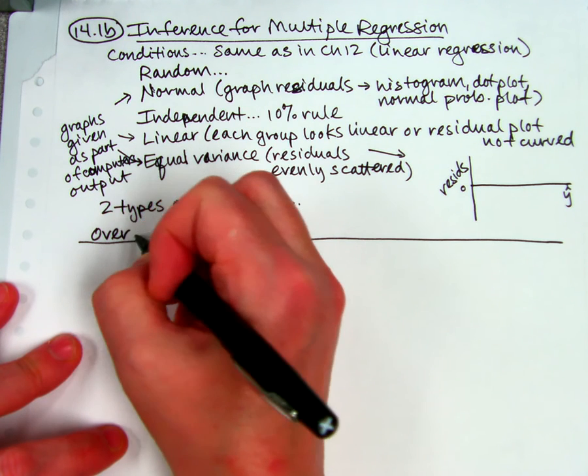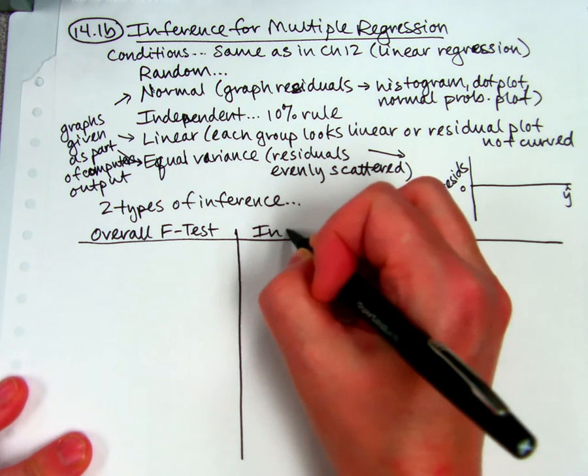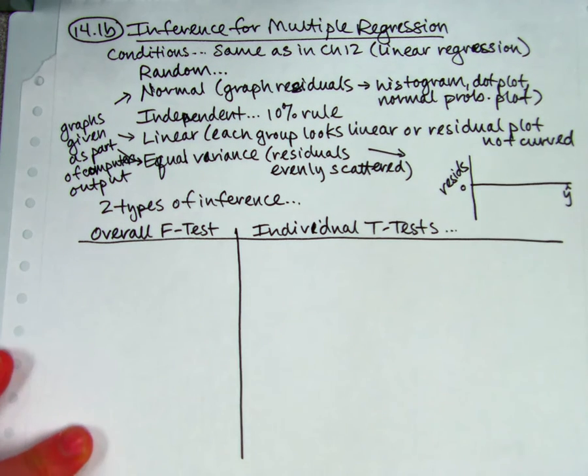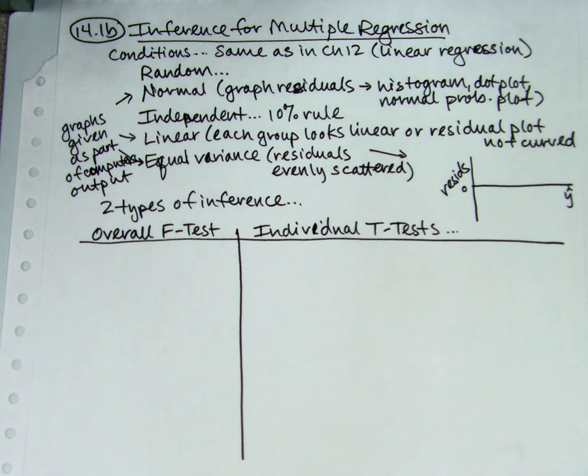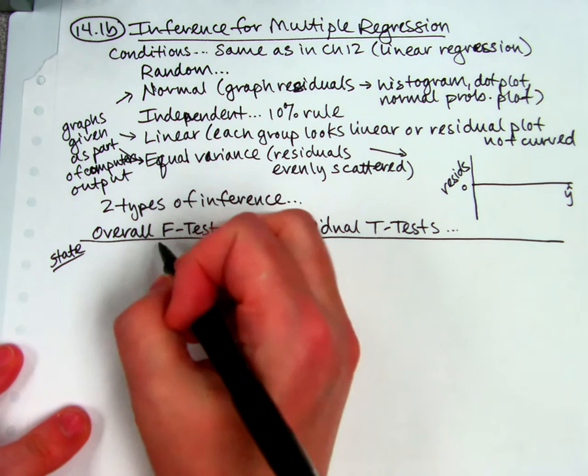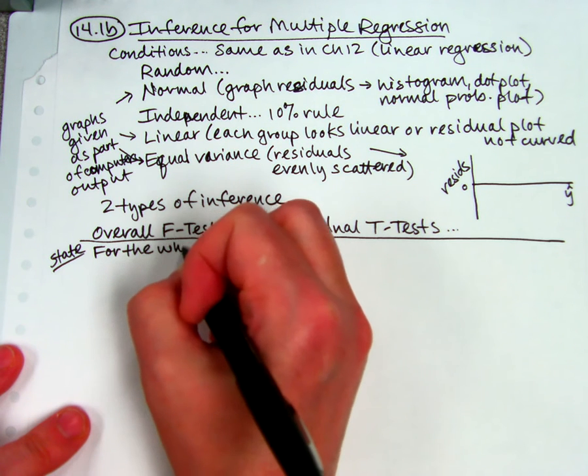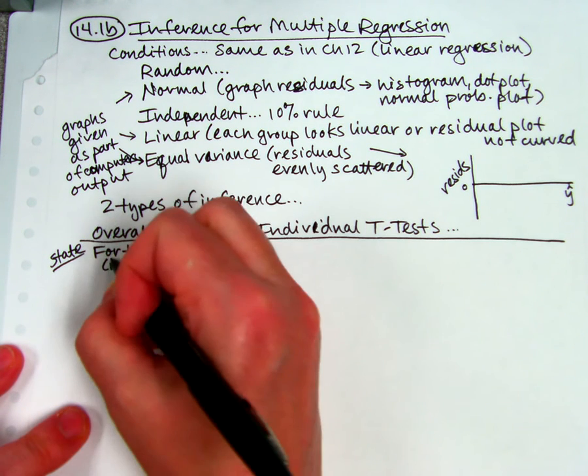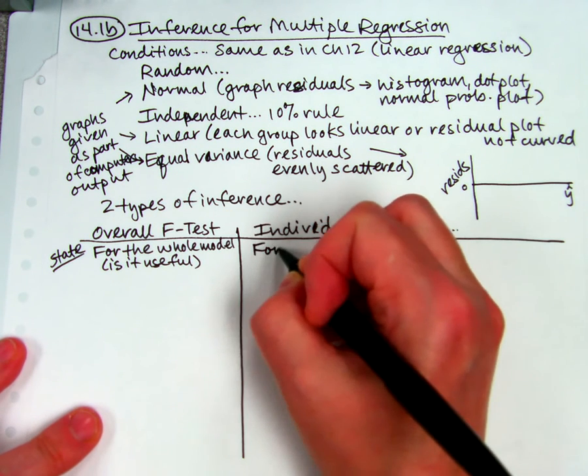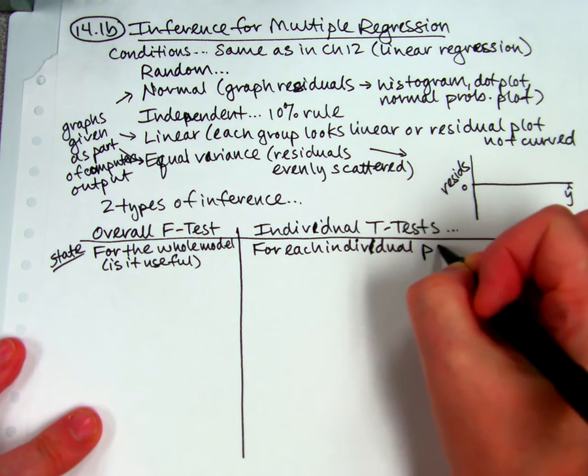We have the overall F test. That kind of reminds you of ANOVA, I hope. And then we're also going to do what's called the individual T test. The hardest part is you have to be able to write the hypotheses and interpret the results. So the overall F test is for the whole model that has multiple explanatory variables in it. We want to know is this whole model useful or not. And then we also can test individual parameters within that model. For each individual parameter, we can test to see if that parameter is important or significant or useful.